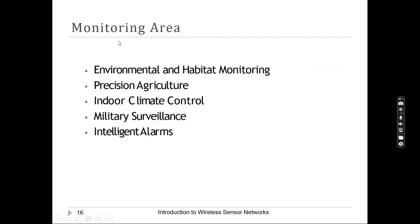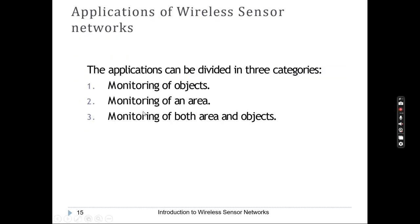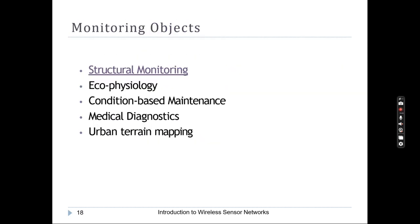Moving to monitoring objects — the second category — structural monitoring is one key application. 100-storey buildings need to be regularly monitored for their structural health. Appropriate sensors can be placed in walls, in between bricks, and so on. They collect data and tell you the parameters — where cracks are forming and everything — so that the health of the structure can be maintained and monitored.